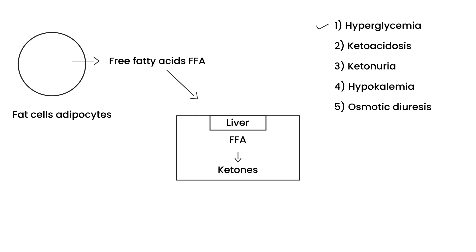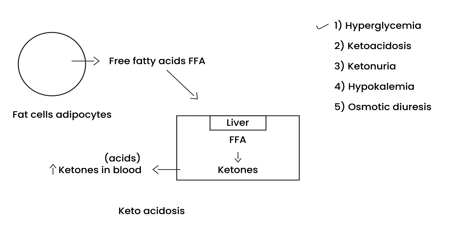The liver converts free fatty acids to ketones — an extremely important part of diabetic ketoacidosis. These ketones then go into the bloodstream, and that is essentially known as ketoacidosis, because ketones are acids. Another name for ketoacidosis is metabolic acidosis; the two terms mean the same thing.